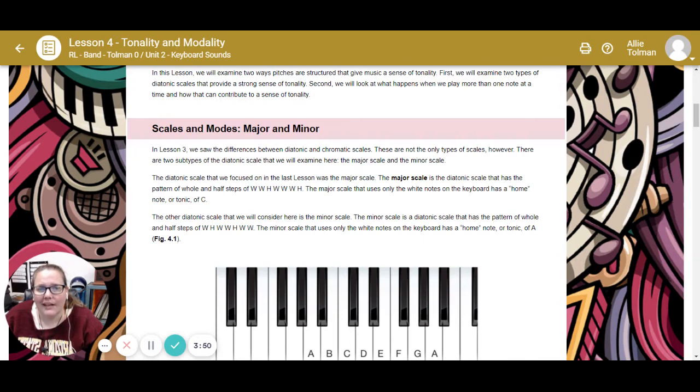There are two subtypes of the diatonic scale that we're going to examine here: the major scale and the minor scale. The major scale is the diatonic scale that has the pattern of whole, whole, half, whole, whole, whole, half. The major scale that uses only the white notes on the keyboard has a home note or tonic of C. Just the white notes. C to C, that is the tonic of C.